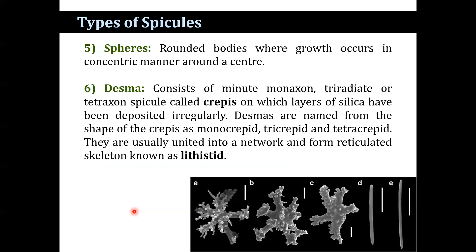Spheres are rounded bodies that grow in a concentric manner around the center. The last type is desma, which consists of minute monaxon, tri-radiate, or tetraxon spicules with layers of silica deposited irregularly, called crepts. Desmas are named from the shape of their crepts as monocrepid, tricrepid, and tetracrepid. They are usually united into a network and form a reticulated skeleton.